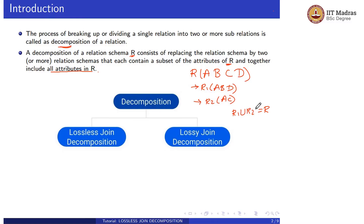There are two types of decomposition: lossless joint decomposition and lossy joint decomposition. Lossless joint decomposition means there is no loss of data. If we perform the natural join operation between R1 and R2, we will get the same relation R.